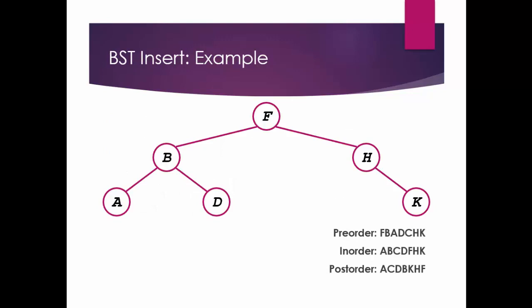Now this is an example. For pre-order — root, left, right — root is f. After that we go to the left side, so the root is b, write b. After that go left again, there is no left child, only root, so write a. Then come back to b and check the right child, which is d. Then come back to f and check the right child, which is h. H doesn't have any left, so we directly write h and then k.